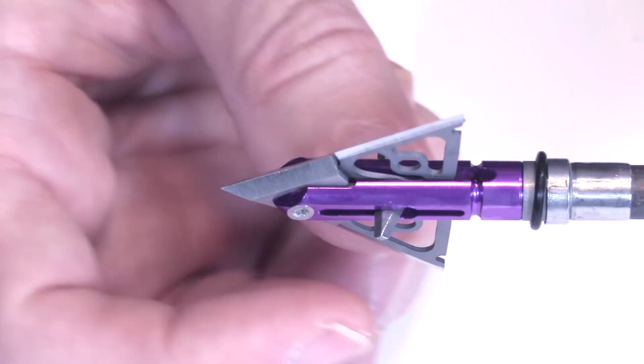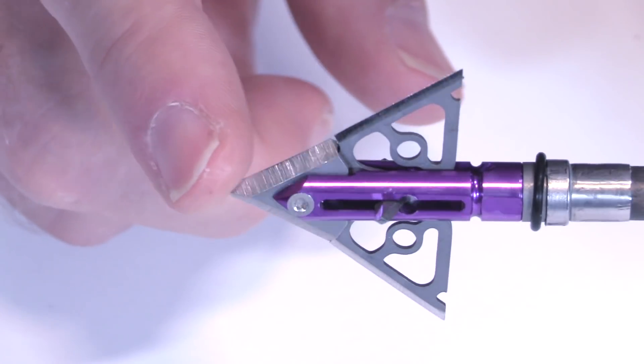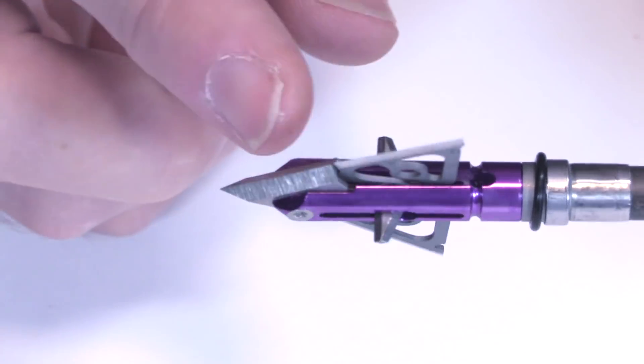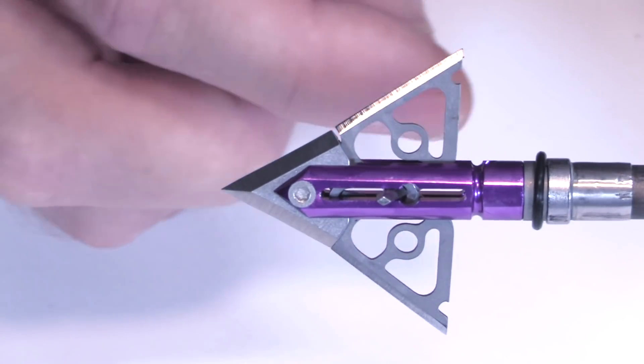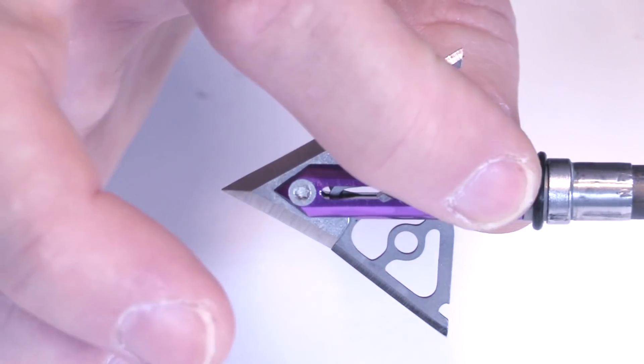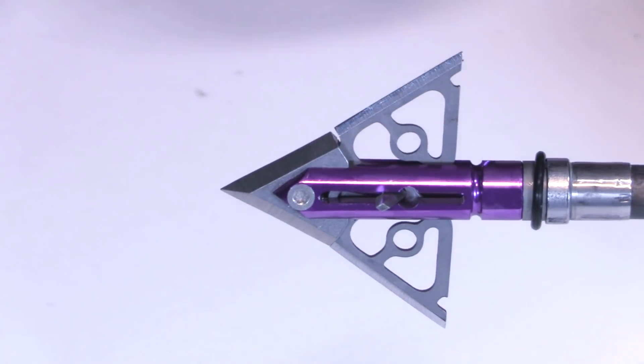Again, the blades are all made out of stainless steel. The tip is stainless steel. The drive key and that pin holding it in place, they're all steel. The ferrule itself is made out of aluminum. I believe it's a 7075.